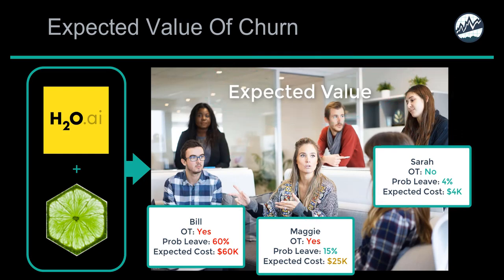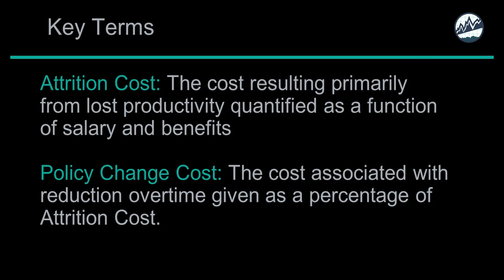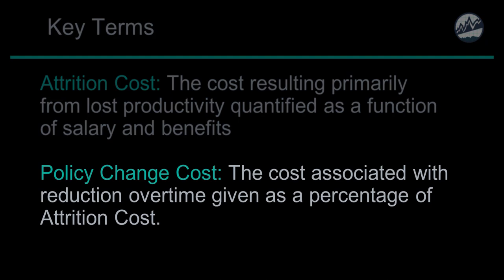We'll focus on three people: Bill, who is considering leaving and working a lot of overtime; Maggie, who is also working overtime but is in a management role and seems to like her job; and Sarah, who loves her job and isn't working any overtime. Two key terms to familiarize yourself with: attrition cost — the cost resulting primarily from lost productivity quantified as a function of salary, benefits, and training time — and policy change cost, the cost associated with the reduction in overtime given as a percentage of attrition costs. All costs discussed are annualized.